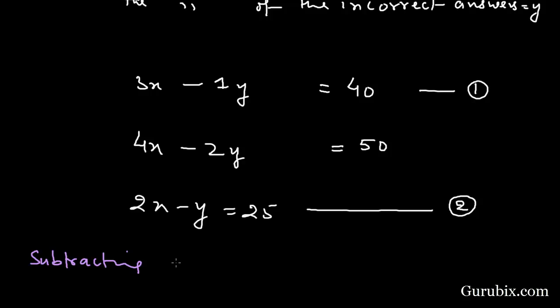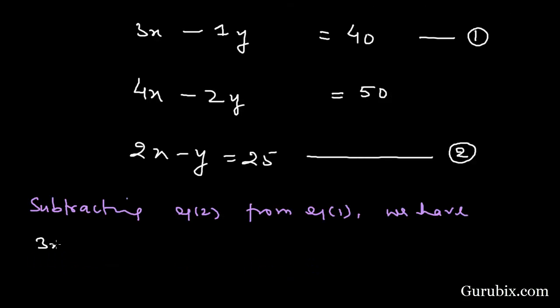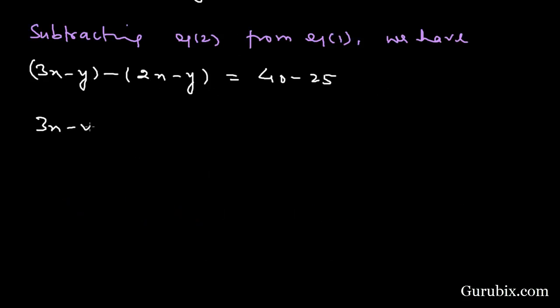So we shall subtract equation number 2 from equation number 1. Then we have 3x - y minus 2x - y. We subtract left hand side from the left hand side and right hand side from the right hand side. So here we have 40 minus 25. We have 3x - y - 2x + y = 15. We can cancel out +y with -y, then we have x = 15.